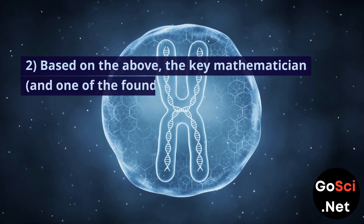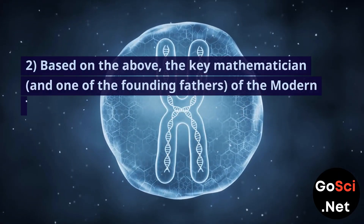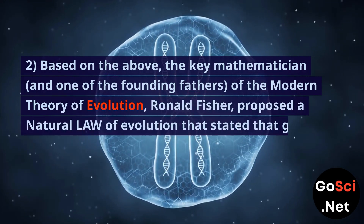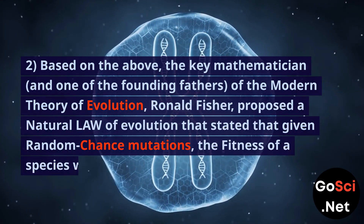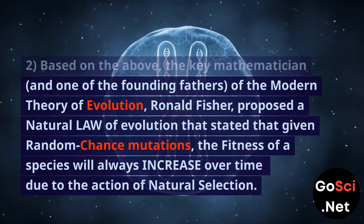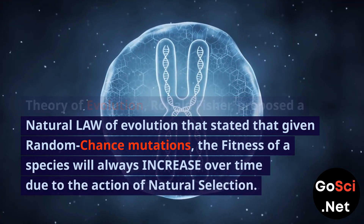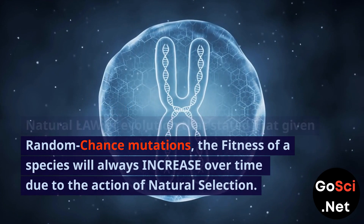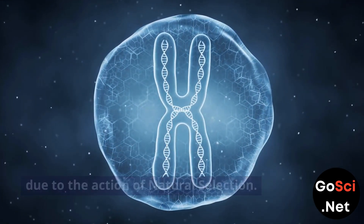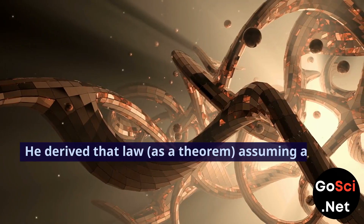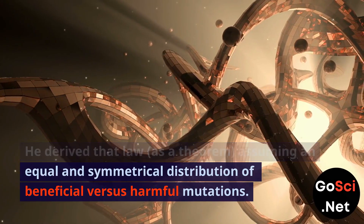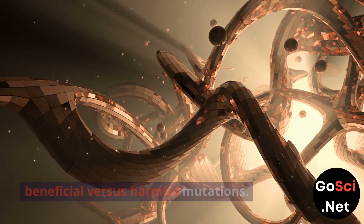Based on the above, the key mathematician and one of the founding fathers of the modern theory of evolution, Ronald Fisher, proposed a natural law of evolution stating that given random chance mutations, the fitness of a species will always increase over time due to the action of natural selection. He derived that law as a theorem, assuming an equal and symmetrical distribution of beneficial versus harmful mutations.